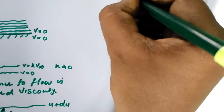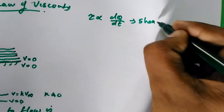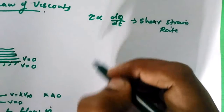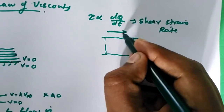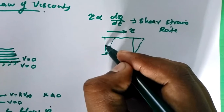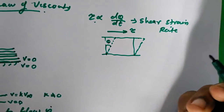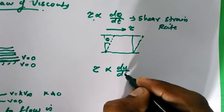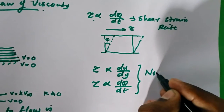In another way, we can write this as tau is proportional to d(theta)/dt, that is the shear strain rate. Initially the fluid layers are parallel, and when a shear stress is applied, they deform — the angle theta is the shear angle. So shear stress is proportional to d(theta)/dt. This law — shear stress proportional to du/dy, or shear stress proportional to shear strain rate — is called Newton's law of viscosity.